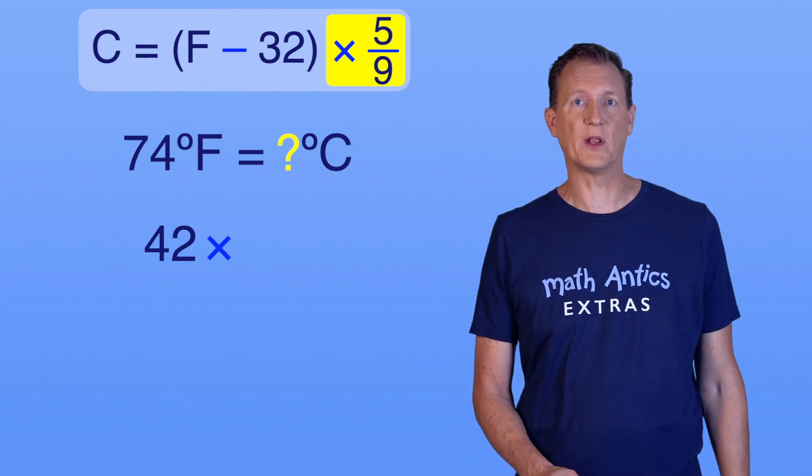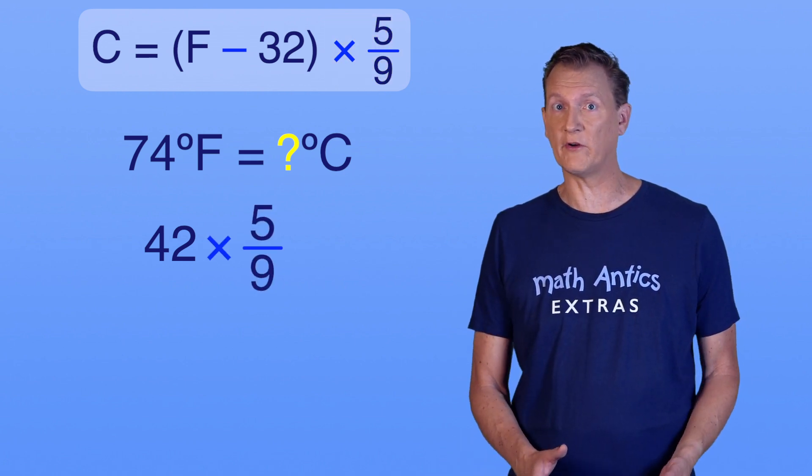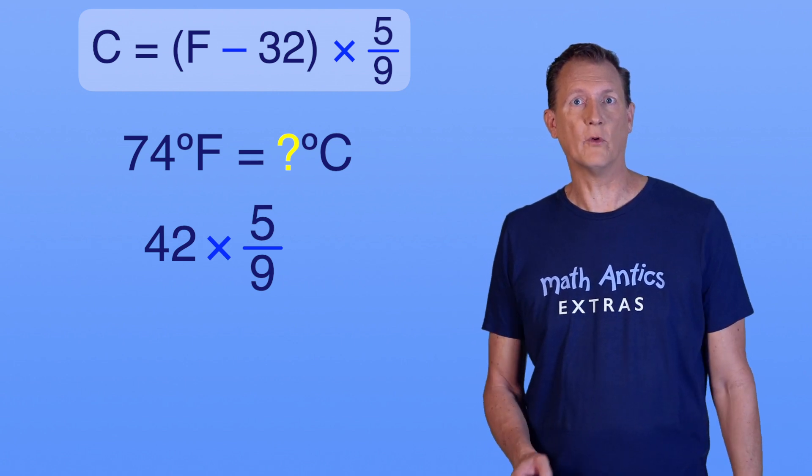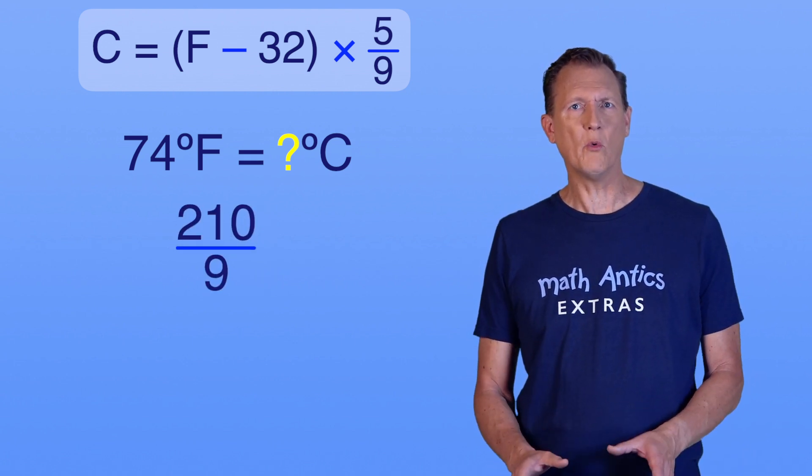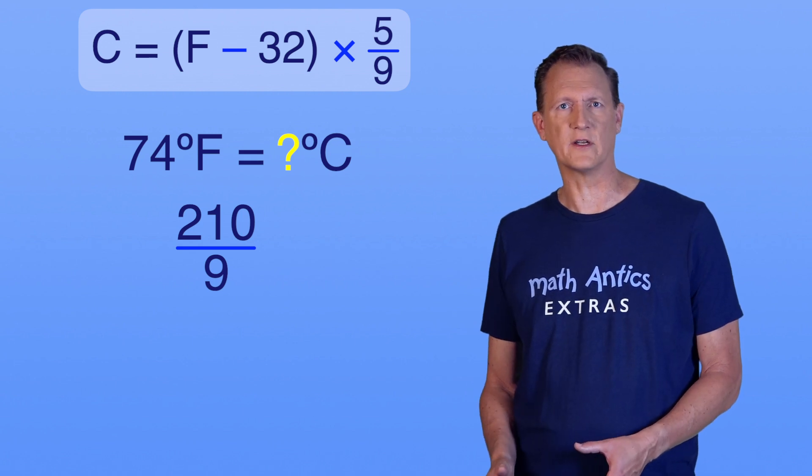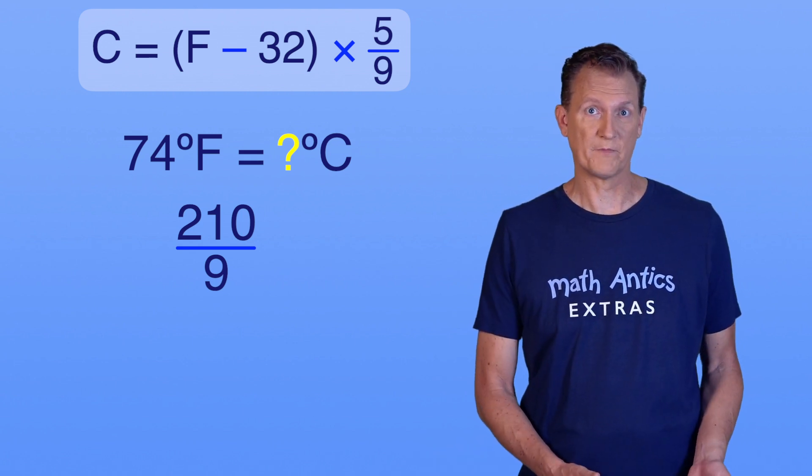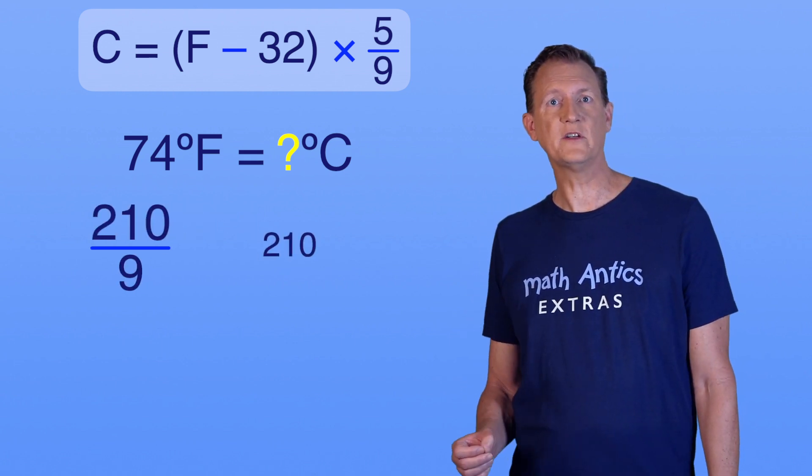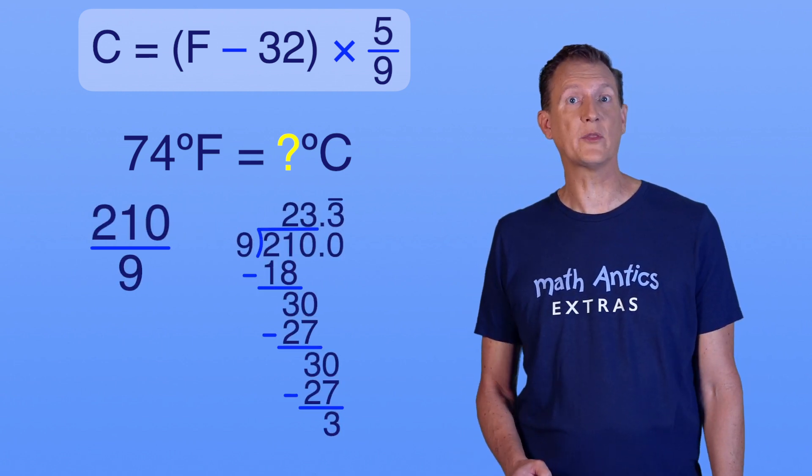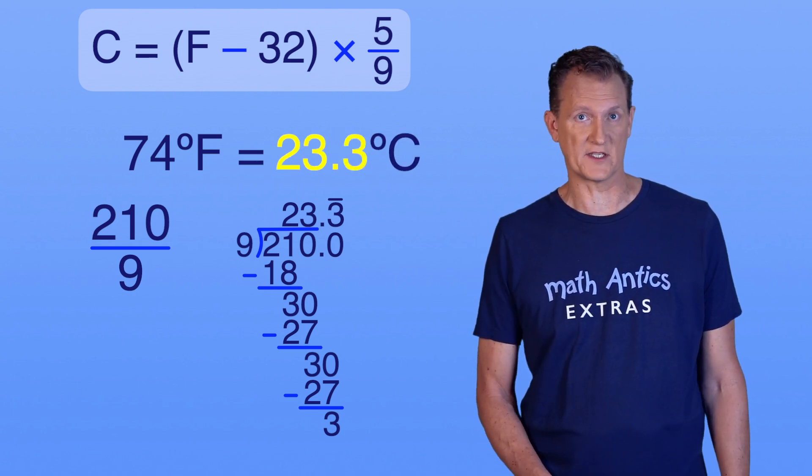And then we take that and multiply it by 5 over 9. If you don't know how to work with fractions, be sure to check out our videos about fractions. 42 times 5 over 9 equals 210 over 9. But we don't want to leave our answer as an improper fraction. Since this is a temperature, it's better to have your answer as a decimal number. To convert it to a decimal, all we have to do is divide. 210 divided by 9 is 23.3 repeating. So 74 degrees Fahrenheit is 23.3 degrees Celsius.